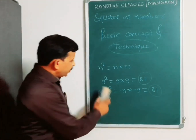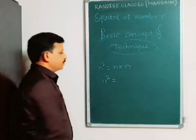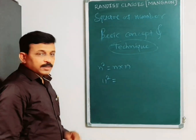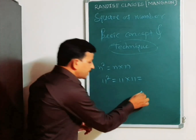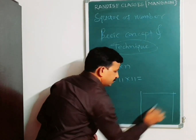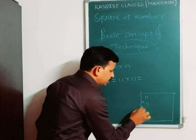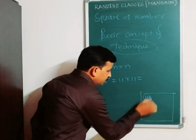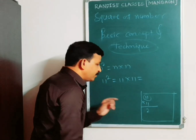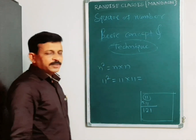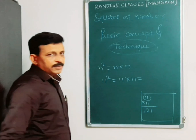Now, the power of 11 is 2, means 11 square. 11 square equals 11 into 11. See here — just a fun technique for multiplying 11. 11 into 11: take 1 plus 1 equal to 2 and write it between the 1 and 1. So 121 is the multiplication of 11 into 11.